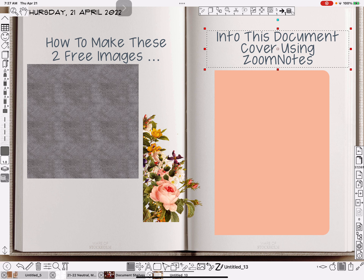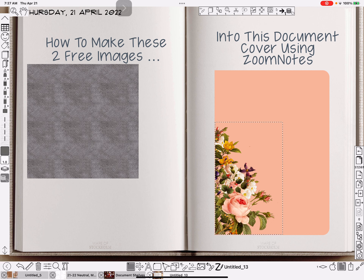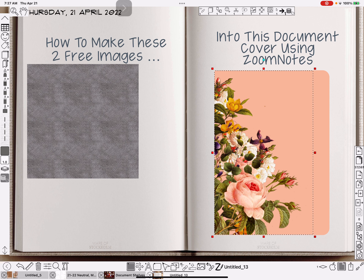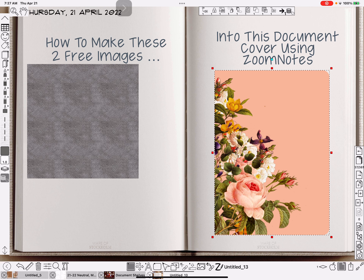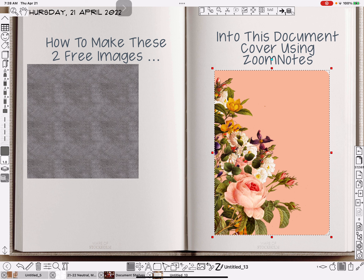Now I'll select the flower image and move it onto the corner where I want it, maybe make it a little bit bigger. The polygon was there first so it goes to the back automatically. I'll select the polygon and use the 'Move to Back' icon from my toolbar at the top — I've got them in alphabetical order. Then I'll select both the polygon and the flower image, copy them, and paste as image.